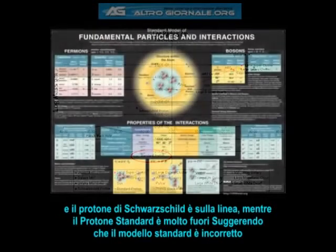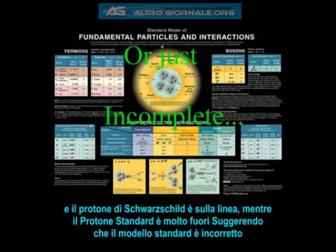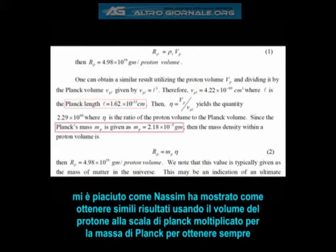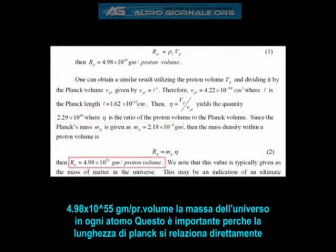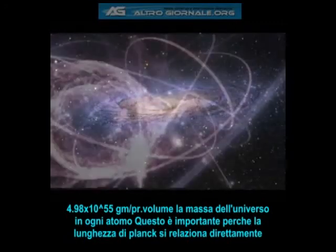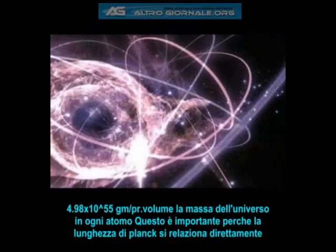Haramein also showed how one can obtain similar results by using the proton volume to Planck volume ratio multiplied by the Planck mass, arriving at the same result of 4.98 times 10 to the 55th grams — the entire mass of the universe inside every single atom.